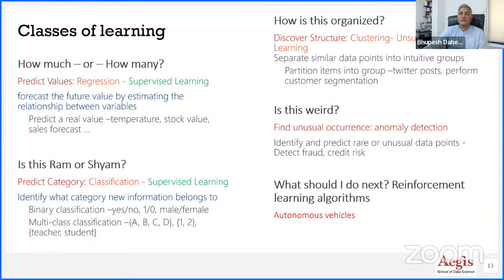Another type of problem machine learning can solve is clustering — creating groups. In marketing terms, this is called segmentation. For example, you have 350 million customer records from Airtel. Can you segment this data based on data usage, ARPU, billing, location, and gender? What would be the most efficient way to create groups? Clustering algorithms can do that.